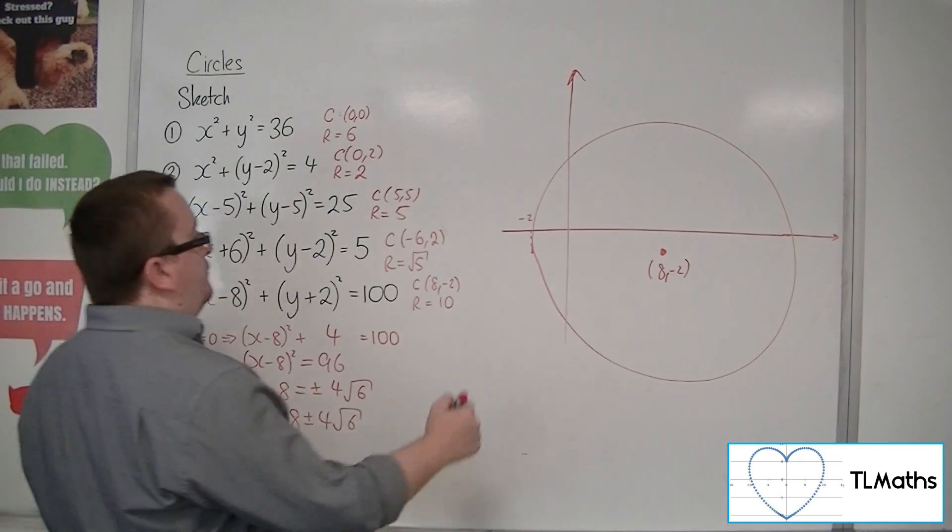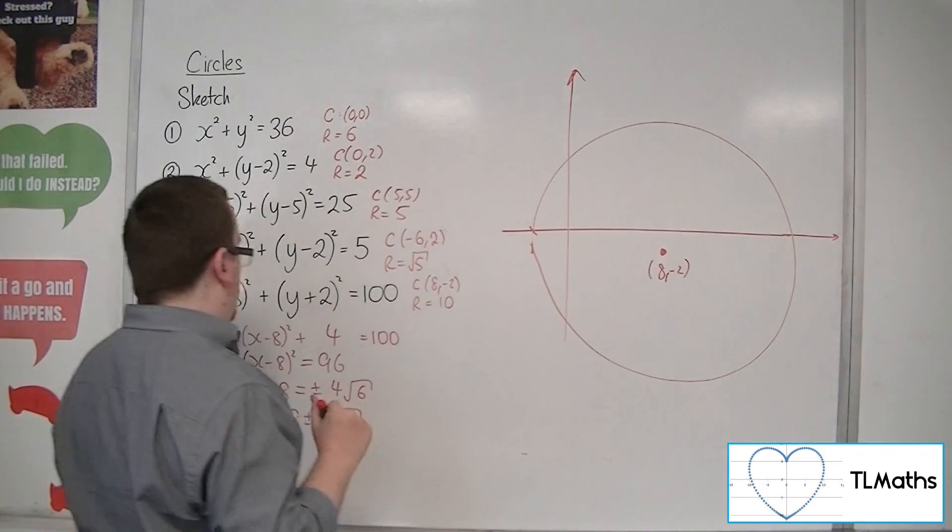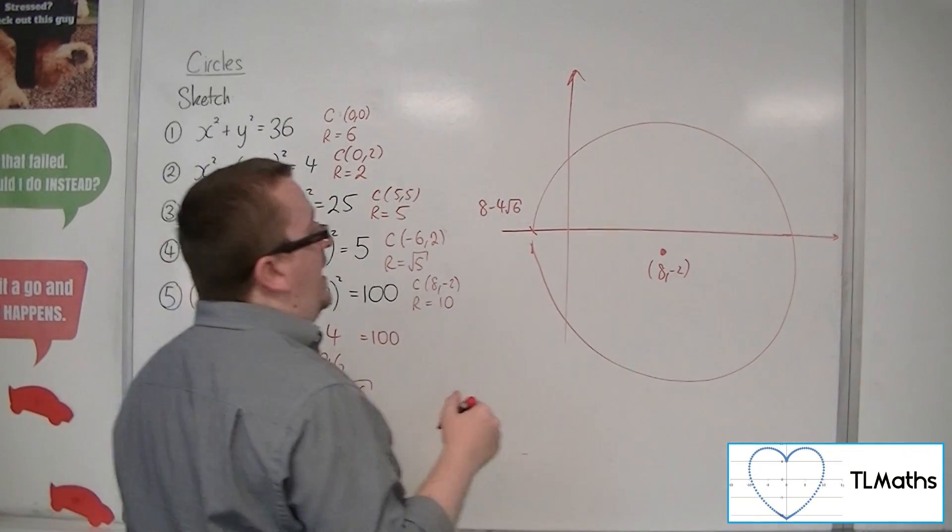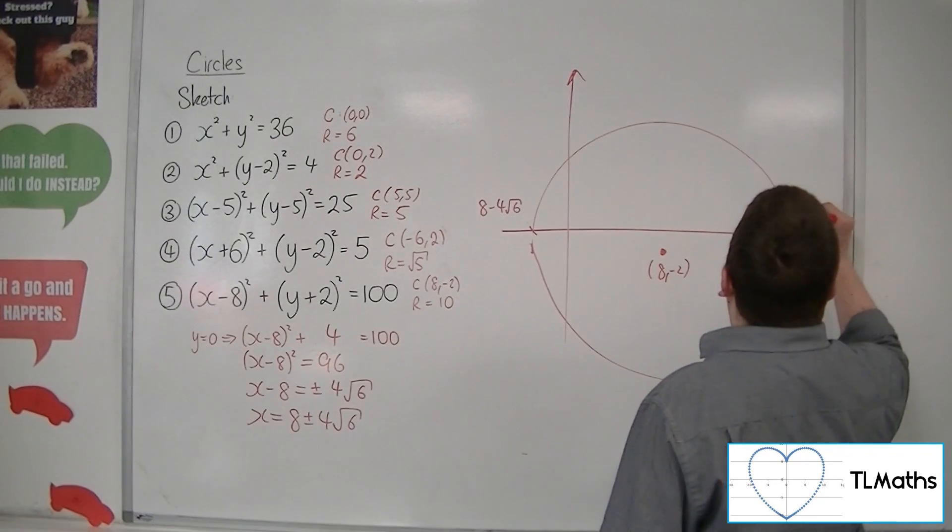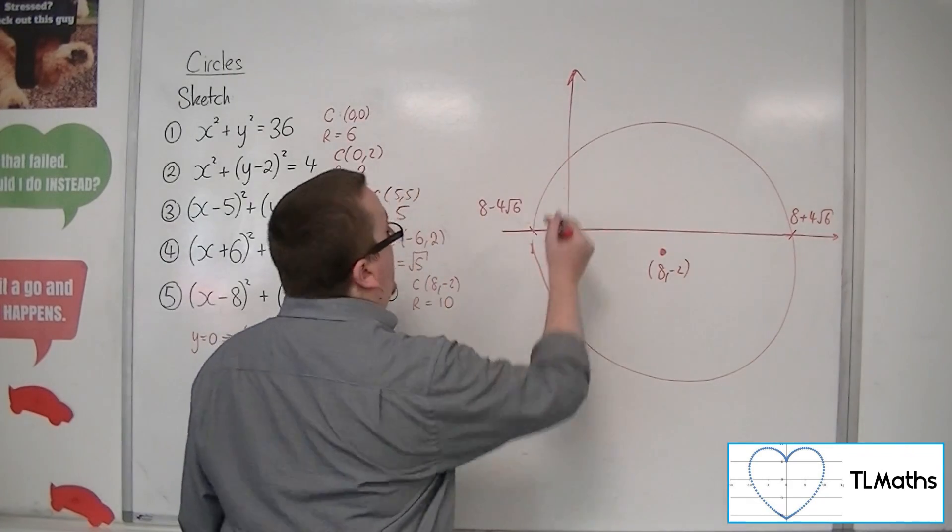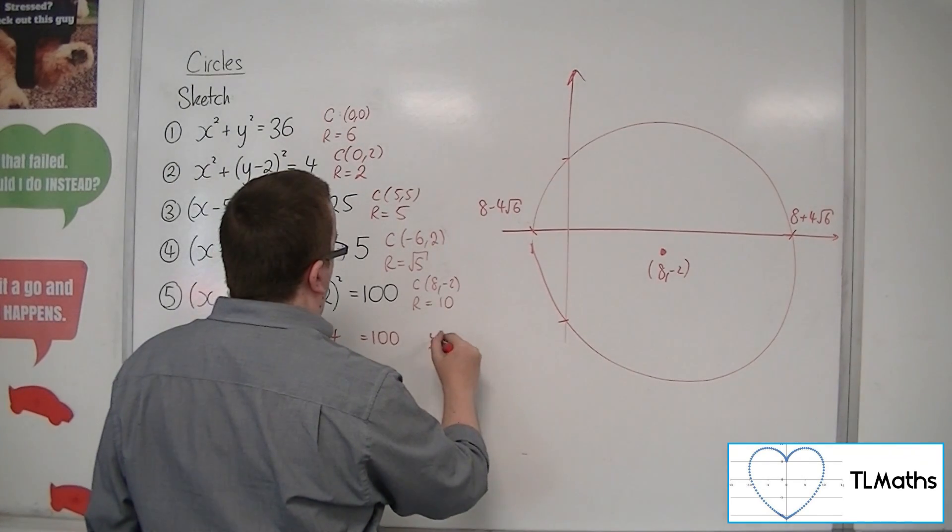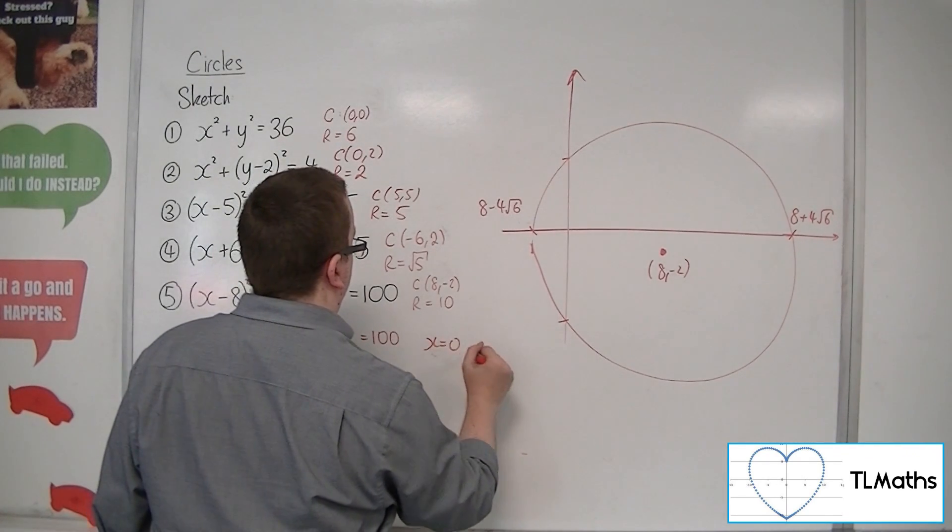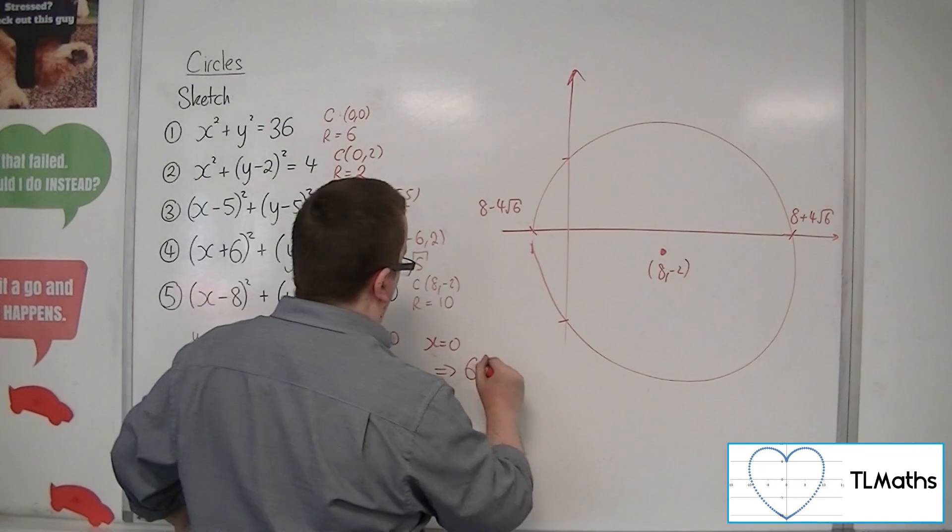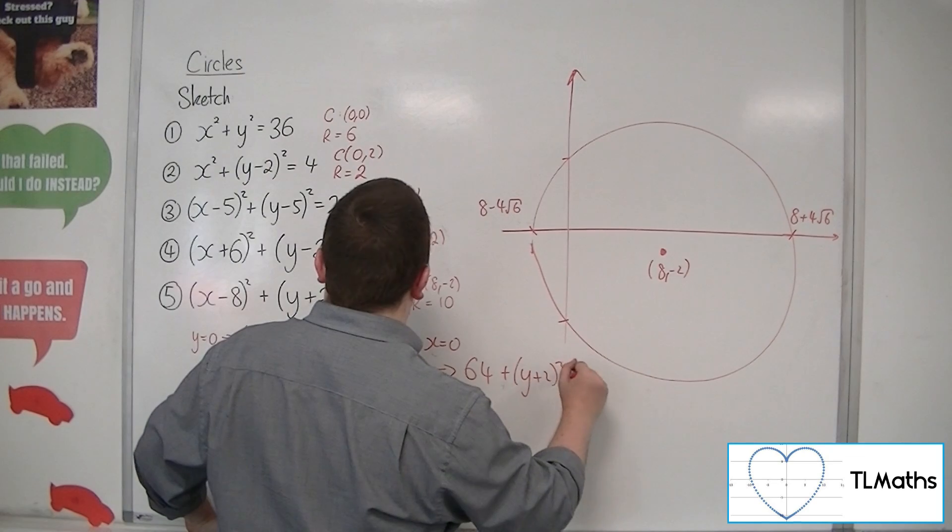So, what we've got is this end point is at minus 2. But, that crossing point there is 8, take away 4 root 6. That's the exact point of where it crosses the x axis there. And, we've got 8 plus 4 root 6 over here. Now, it's going to be crossing the y axis at two different points. So, we can work those out as well. So, when x is 0. So, we're going to get 0, take away 8 or squared. So, that'd be 64.